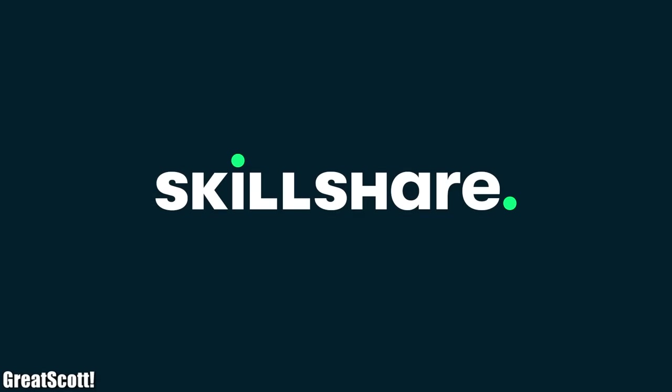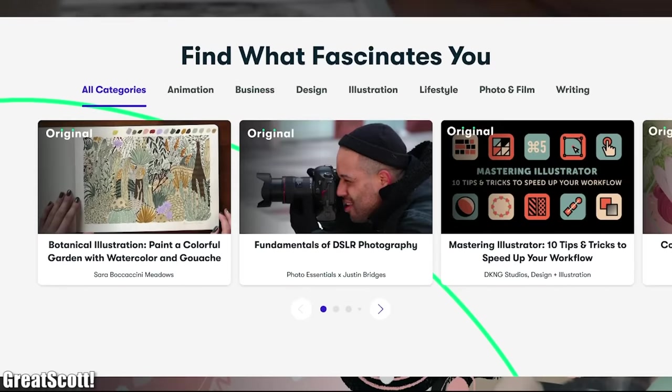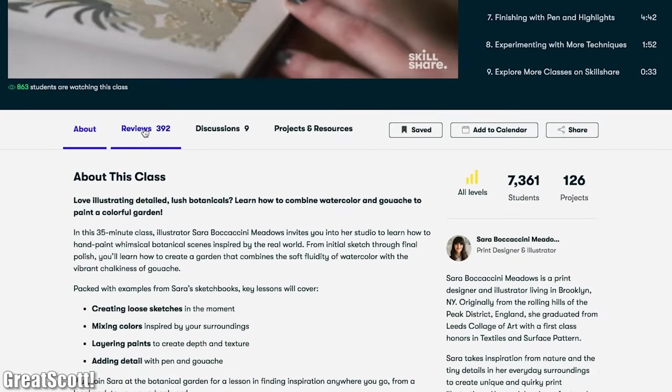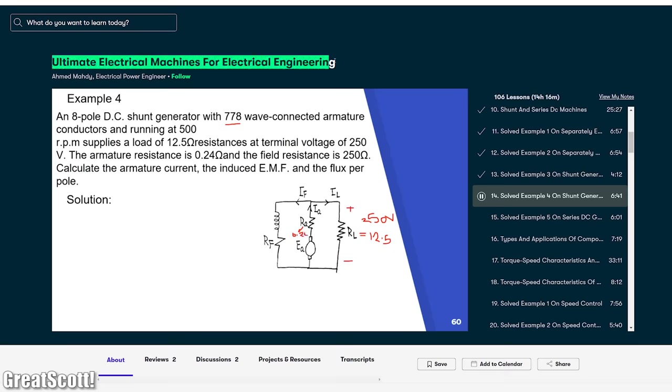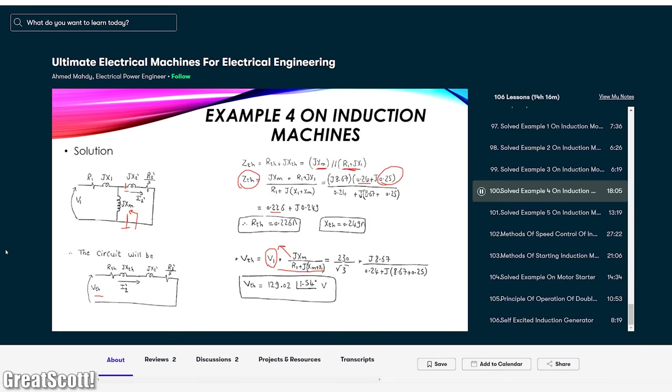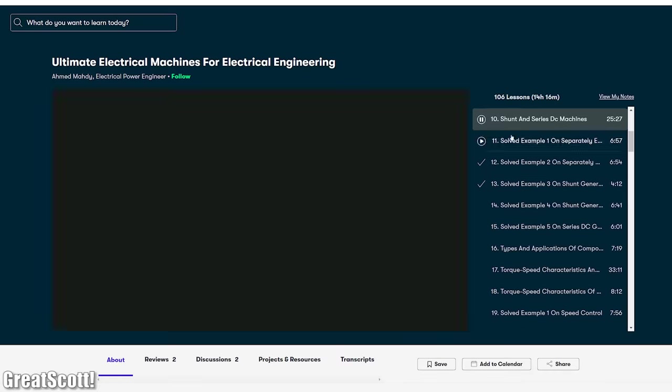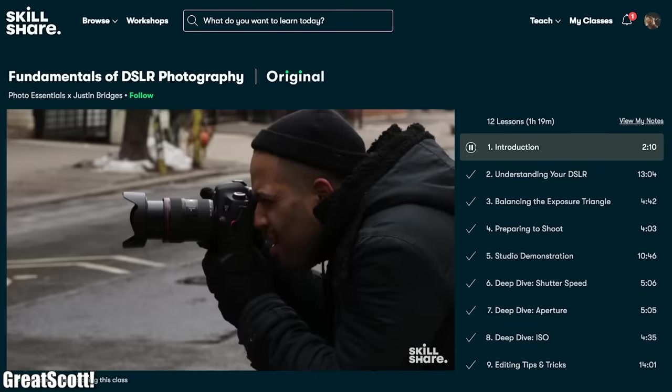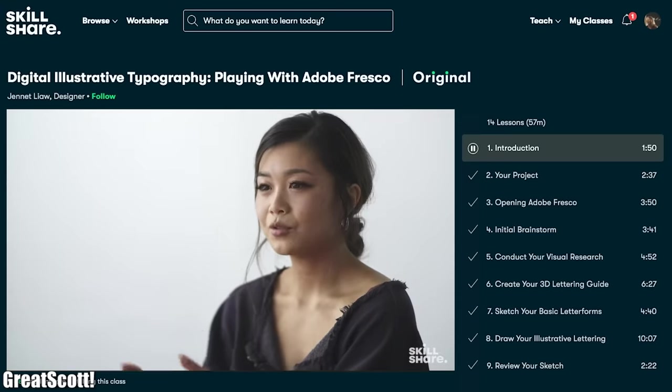This video is sponsored by Skillshare which is an online learning community for creatives that offers thousands of inspiring classes. Topics include illustration, design, photography, video, freelancing and much more like for example electronics. Last time I told you that I was watching the Ultimate Electrical Machines for Electrical Engineering class by Ahmed Mahdi and truth be told I am still watching that because there is a ton to learn. But luckily Skillshare always remembers where I left off so that I can always continue my learning adventure seamlessly. And if you want to join me on this adventure then I am happy to tell you that the first 1000 subscribers to click the link in the description will get a 1 month free trial.